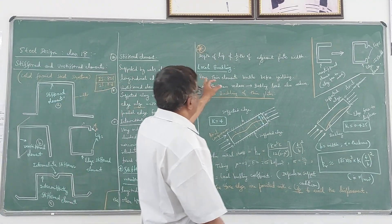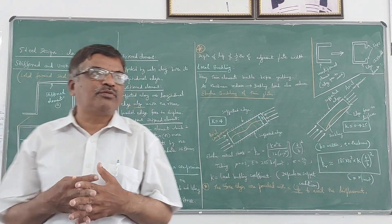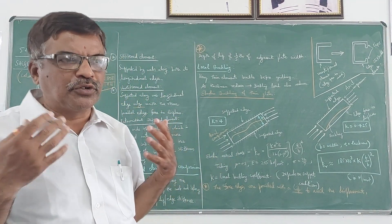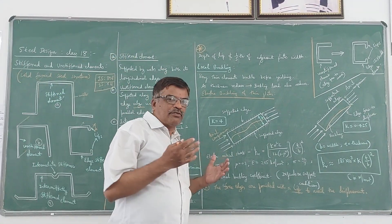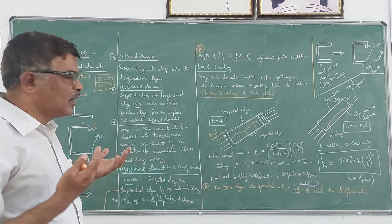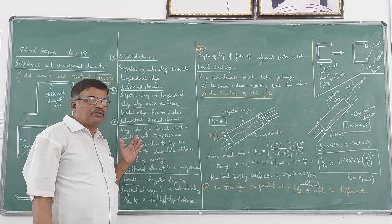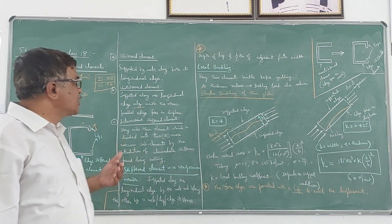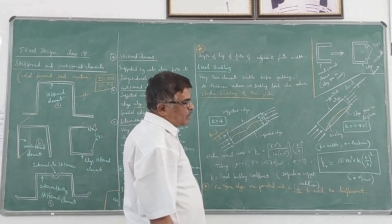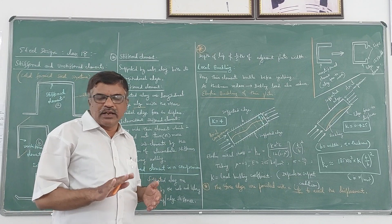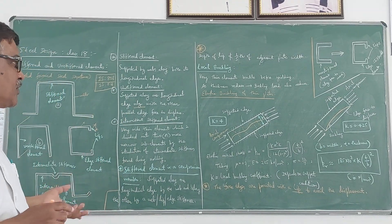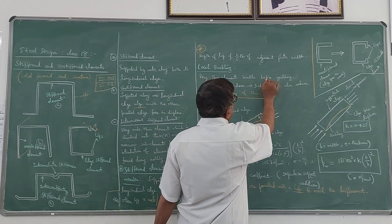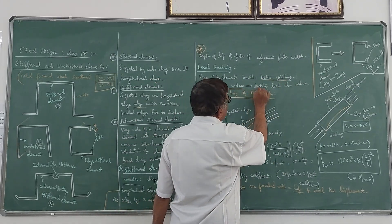A very important aspect is local buckling. About buckling you have understood in beam-column design also. Buckling will be due to thin members. In the case of columns, you can compute the buckling load using Euler's formula or Rankine's formula. Now let us see what is meant by local buckling of a plate. Since cold-formed sections are formed from thin steel plates, we have to apply the concept of buckling of plates. Very thin elements buckle before yielding.